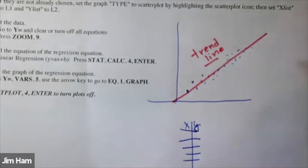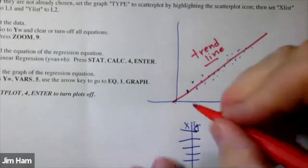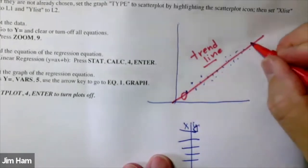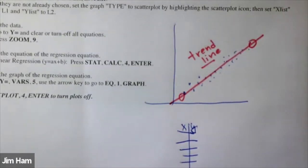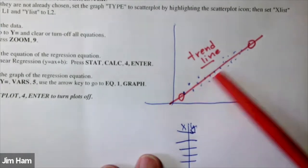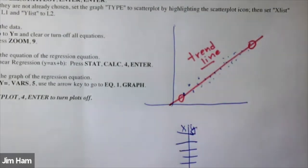Instead of calculating the trend line by hand, the calculator has an algorithm that will give us the best fit line. I'll show you what that means. We'll draw the scatter plot and also draw the line, and see that one is a good fit of the other. I'll walk you through the steps today. Outside of class, if you forget some steps, this document is in e-learning.